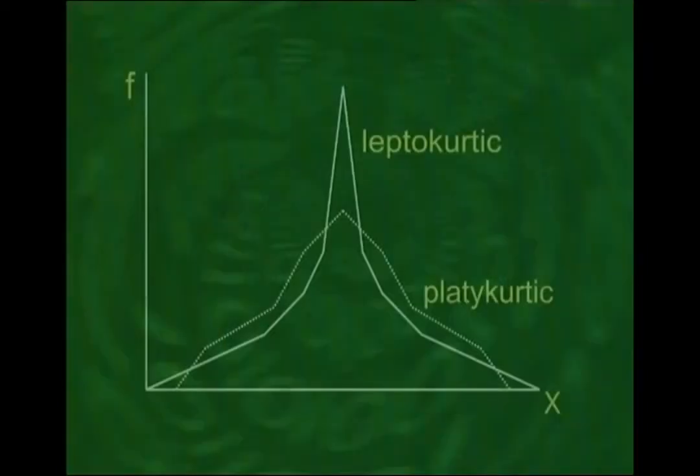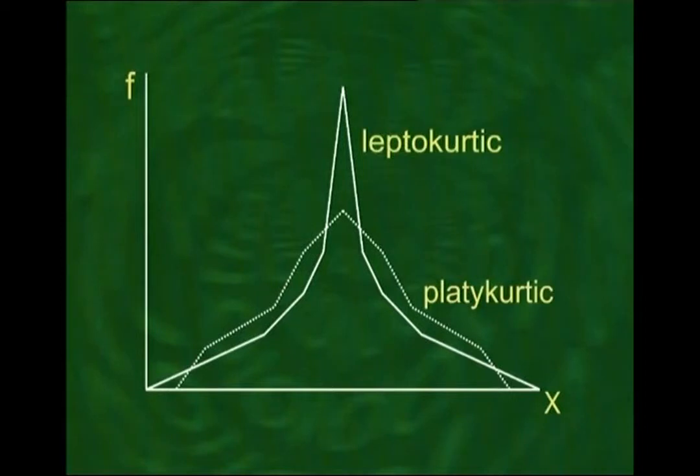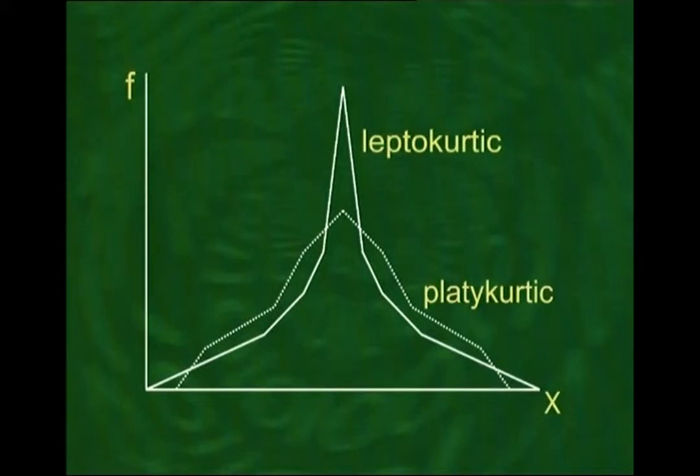The next concept is kurtosis, a term introduced by Karl Pearson. It literally means the amount of hump in your distribution — the concept of peakedness or flatness. When values are closely bunched around the mode, the distribution is leptokurtic, a relatively high-peaked distribution. If the curve is flat-topped, we say it is platykurtic. The normal curve is neither very peaked nor flat and is taken as a basis for comparison.